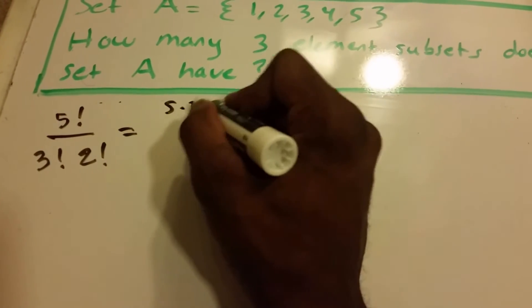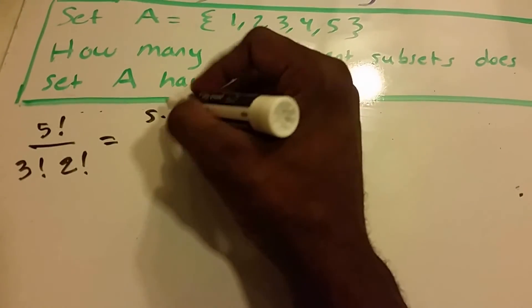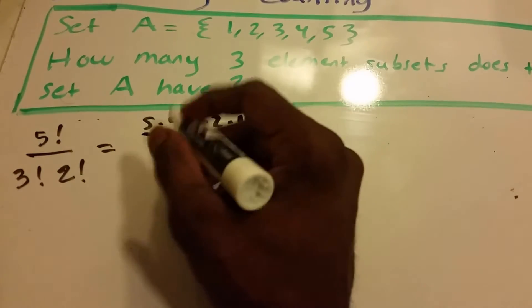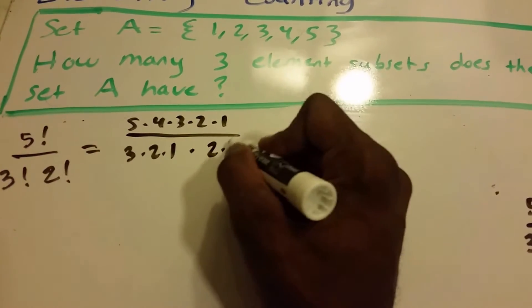So this is equal to 5 times 4 times 3 times 2 times 1 divided by 3 times 2 times 1 times 2 times 1.